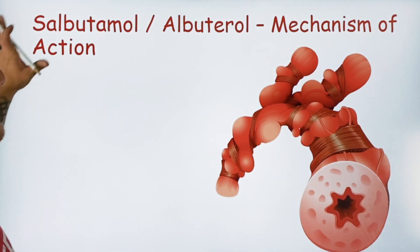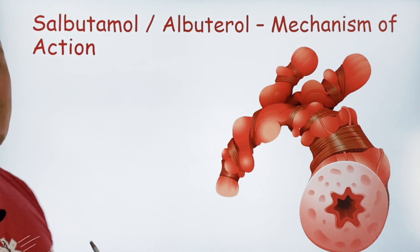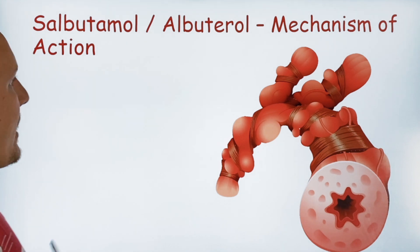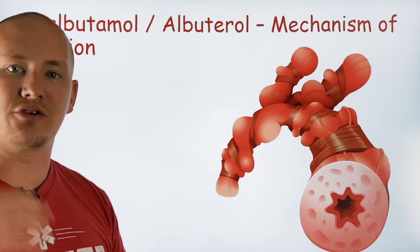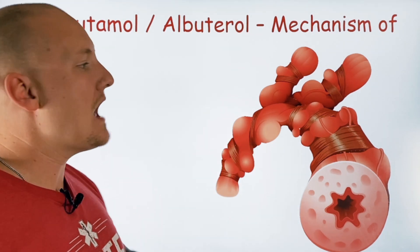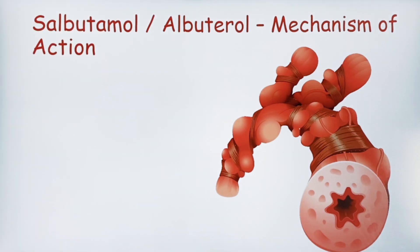Salbutamol is just another way of saying albuterol. There are a few different names for it — Ventolin will be another name for this particular drug. However, the mechanism of it working is going to be identical.